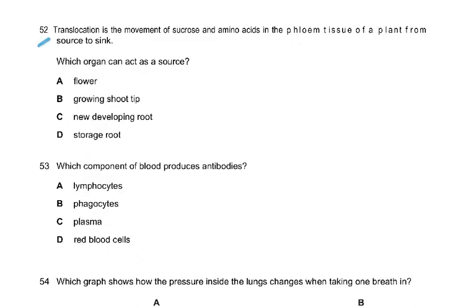Translocation is the movement of sucrose and amino acids in the phloem tissue of a plant from source to sink. A flower is a sink — it uses nutrients to build itself. A growing shoot tip is a sink. A new developing root is a sink. The storage root is a source because it releases stored nutrients. The answer is D.